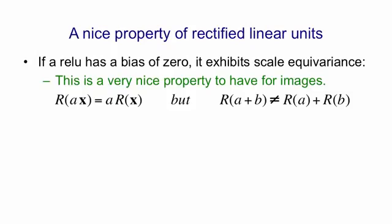In other words, when we scale up all the intensities in the image, we scale up the activities of all the hidden units. But all the ratios stay the same.